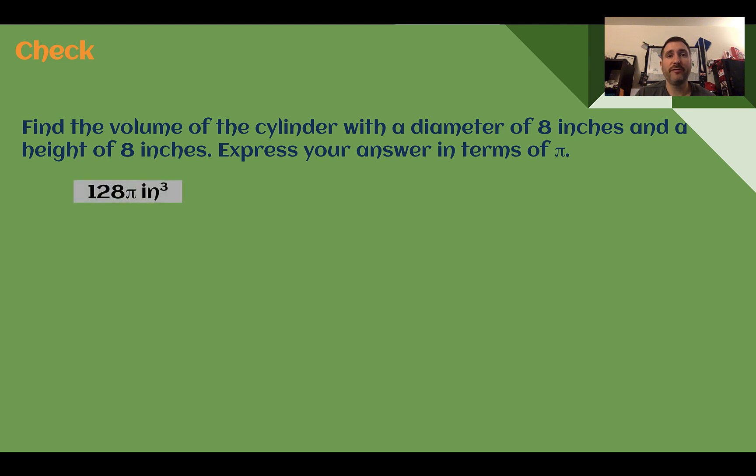Check your answer. You should have found that it is 128π cubic inches. So our diameter was 8, which means our radius is half of that. Our radius is 4. Our height is also 8. So volume is π times my radius of 4 squared times my height of 8. 4 times 4 is 16. 16 times 8 is 128. In terms of π, I just leave the π symbol, so 128π.